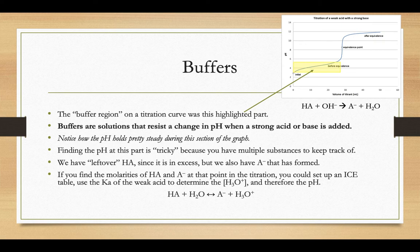Finding the pH during this part is tricky because you have multiple substances to keep track of. You can see right underneath the graph there, there's the reaction that's taking place, a weak acid HA plus OH minus forming A minus and water. What makes finding the pH at this part of the graph so tricky is that you have multiple substances to keep track of.